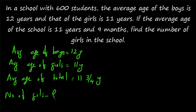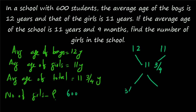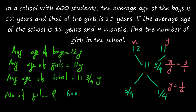The total number of students is 600. When boys and girls are combined, you get the total students, so you can apply the principle of allegation. The difference between 11¾ and 11 is ¾, and the difference between 12 and 11¾ is ¼. So the ratio of boys to girls is ¾ to ¼, which is 3 to 1. Let boys equal x and girls equal y. Then x to y equals 3 to 1. So y equals 1 by 4 into 600, which gives 150 girls in the school.